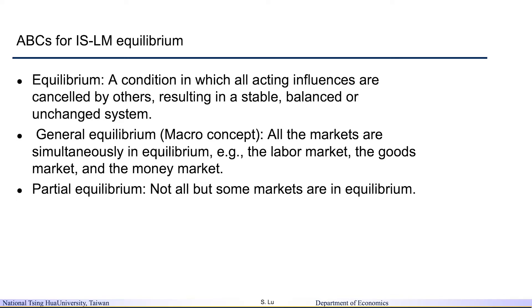To look at the IS-LM equilibrium, the first thing we need to do is define what equilibrium is. Equilibrium is a condition in which all acting influences are cancelled by each other, resulting in a stable, balanced, or unchanged system. Basically, all quantity demanded needs to equal all quantity supplied — that is the equilibrium of the markets.